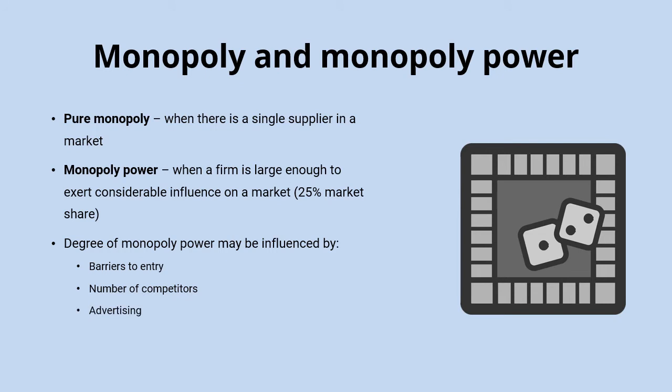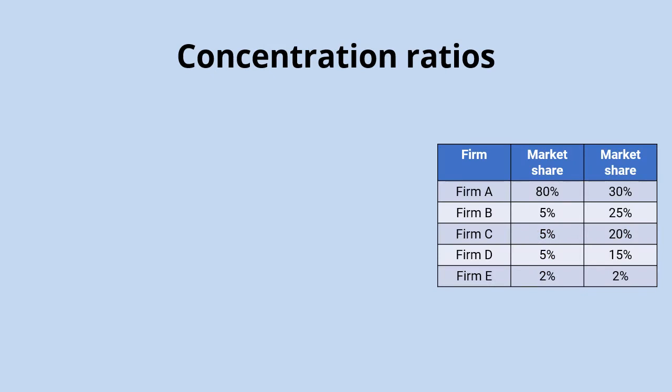Advertising is another factor: the more effective advertising is, the more likely the monopolist is to increase brand loyalty for their product, which itself becomes a barrier to entry. If a firm has really strong advertising that attracts and retains customers, any new business entering the market will struggle to compete and take customers away from the monopolist. Finally, the degree of product differentiation matters — the more a firm can make its product stand out as unique, the more likely it is to develop monopoly power, as customers are more likely to keep choosing that differentiated product over competitors.